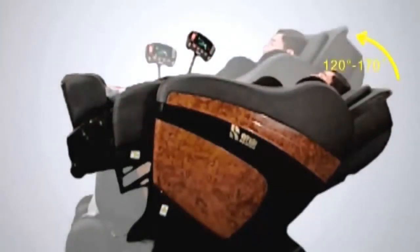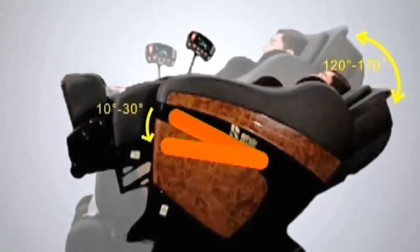The 6850 has two recline angles. Zero gravity is achieved at a 120 degree recline or fully recline flat at 170 degrees.